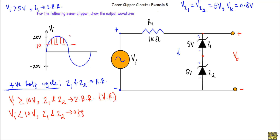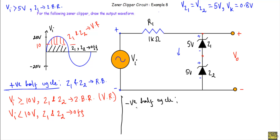So in the region where Vi is less than 10V, Z1 and Z2 are in the off state. When Vi reaches 10V or above, Z1 and Z2 operate in the Zener breakdown region and act as voltage regulators. Now consider the negative cycle. During the negative cycle, this terminal is negative and this terminal is positive. The negative terminal is connected with the N-side of the Zener diodes and the positive terminal with the P-side. As a result, during the negative cycle, the input voltage Vi will try to put Z1 and Z2 in forward bias.